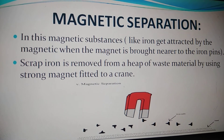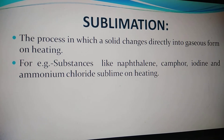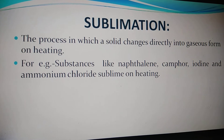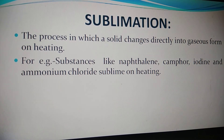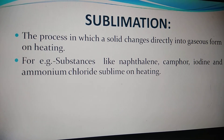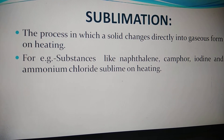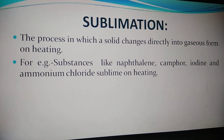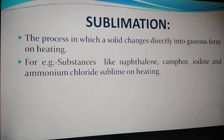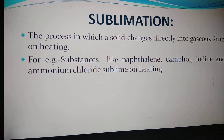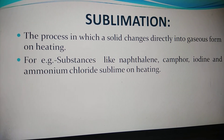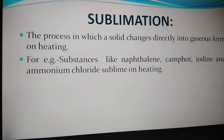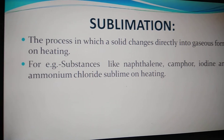The next and last method is sublimation. Sublimation is the process in which a solid changes directly into gaseous form on heating. Generally, when we heat a solid substance, it first converts into liquid form, and on further heating it changes to vapor. But in sublimation, whenever we heat the solid, it directly converts into gaseous form. For example, substances like naphthalene, camphor, iodine, and ammonium chloride sublime on heating.